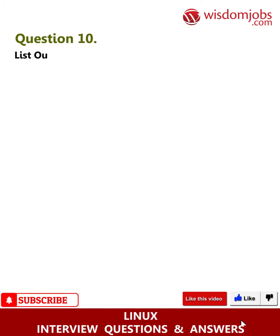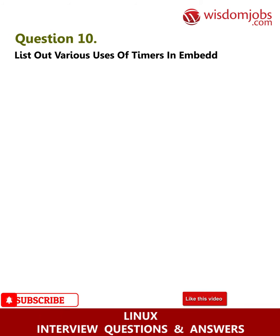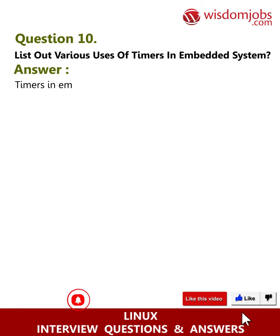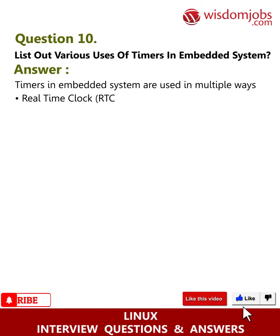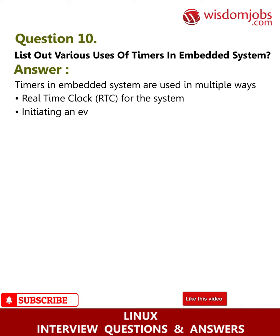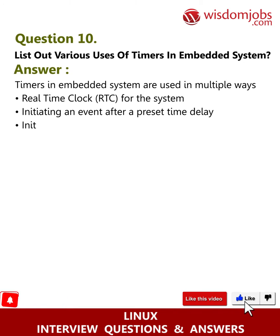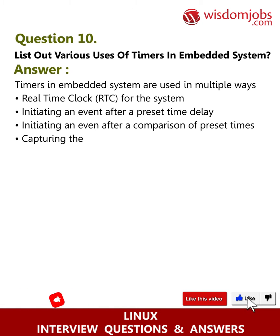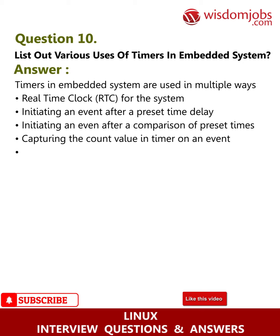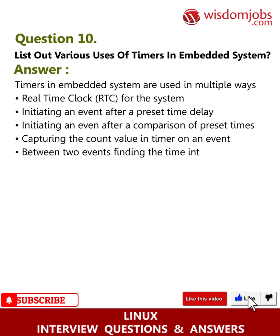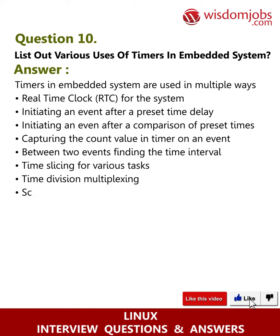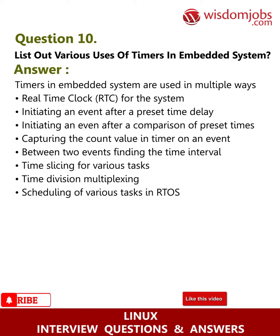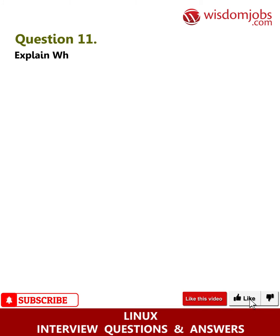Question 10: List out various uses of timers in embedded systems. Answer: Timers in embedded systems are used in multiple ways — real-time clock (RTC) for the system, initiating an event after a preset time delay, initiating an event after a comparison of preset times, capturing the count value in a timer on an event, finding the time interval between two events, time slicing for various tasks, time division multiplexing, and scheduling of various tasks in RTOS.